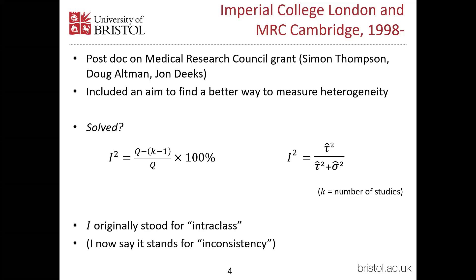We had lots of discussions and came up with some ideas, and one of them which we thought might have some mileage is something we called I squared. You can look at it in two different ways: either as an easy-to-calculate statistic based on the usual test statistic and the number of studies, which has an approximate interpretation, or as a pseudo-parameter — the heterogeneity variance over the total variance. Not many people know this, but I originally stood for inter-class correlation, because of the similarity to the formula for inter-class correlation in a cluster randomised trial. I now say, and pretend, that it stands for inconsistency, because that's how I think it's best to think about it.